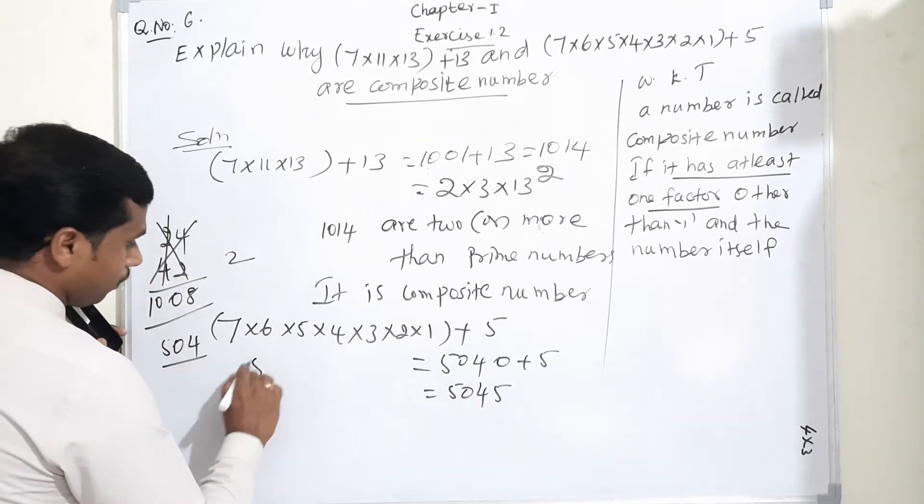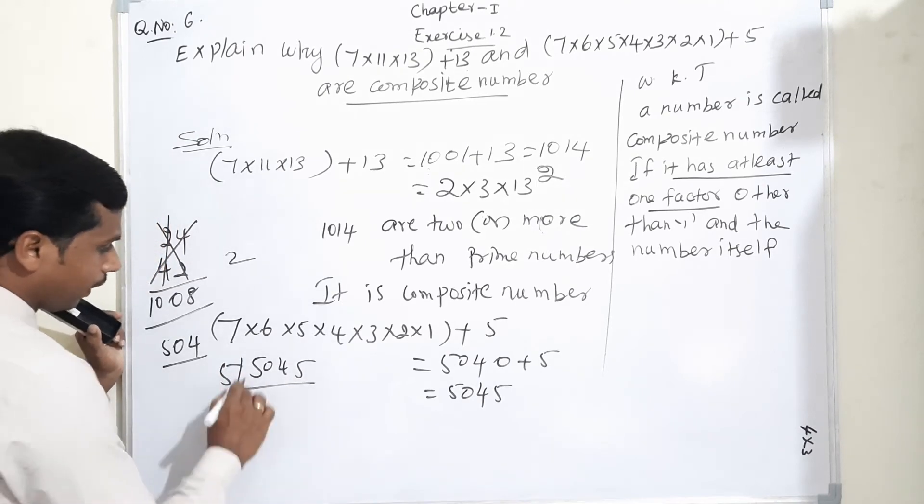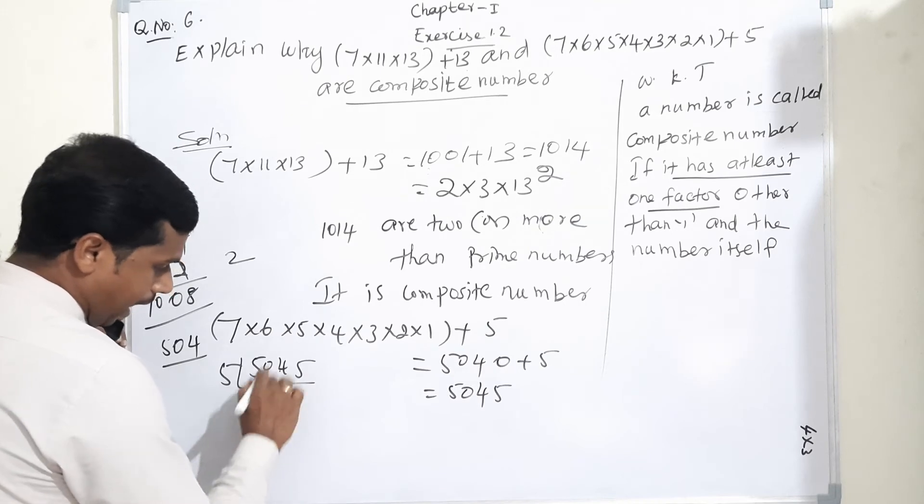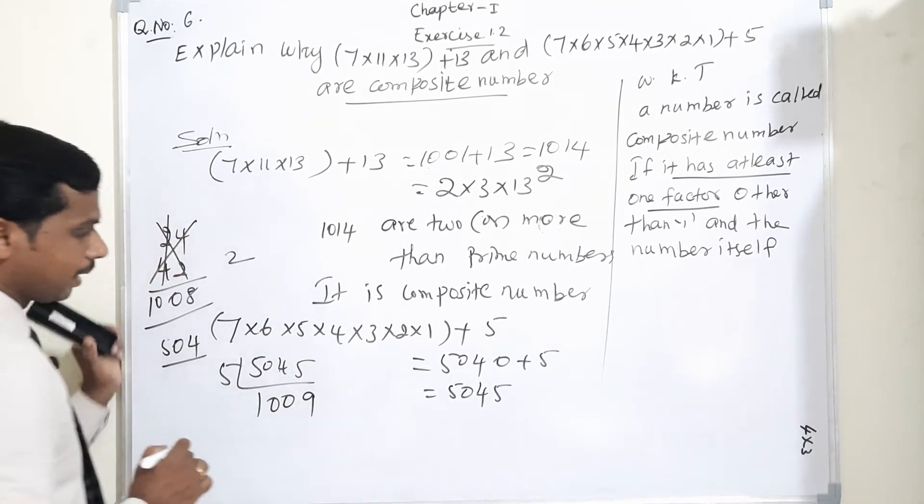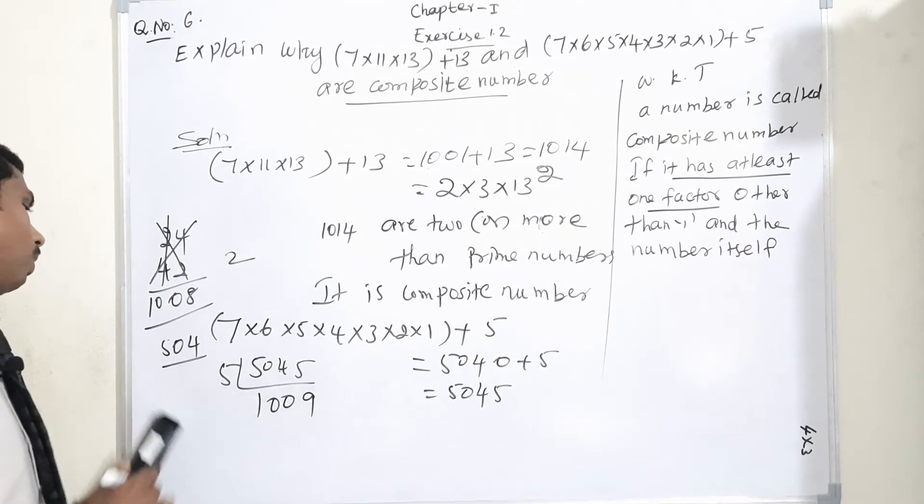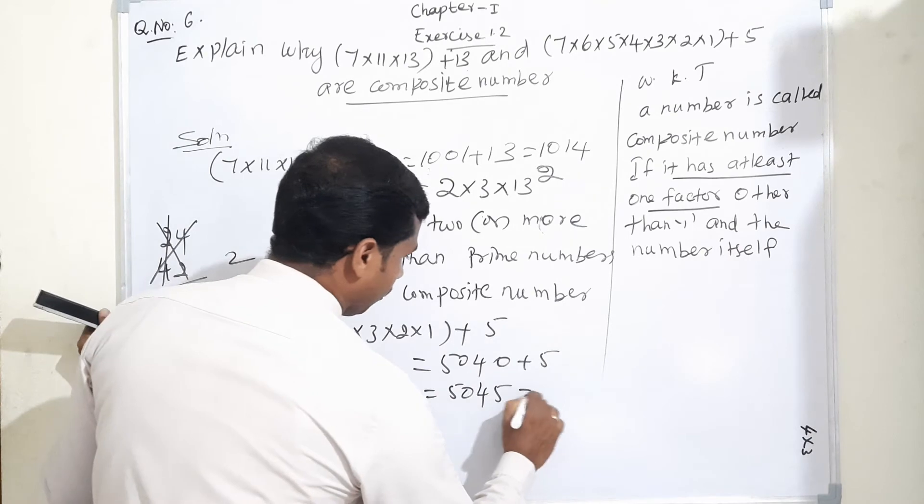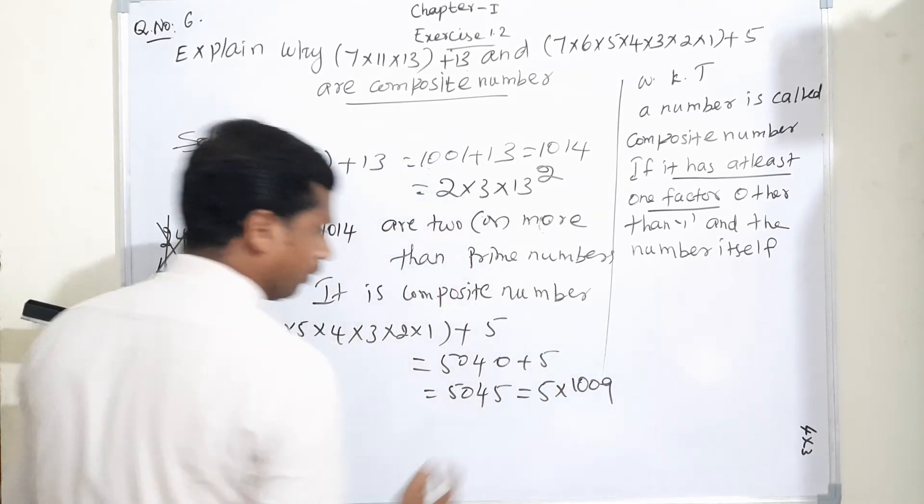If you take the LCM form of 5045: 5 times gives 1009. Add 1 zero, then 45. Definitely we can say 9×5 is 45. So 1009 is also a prime number. Therefore, 5045 equals 5×1009. Here also, what is the meaning of composite number?